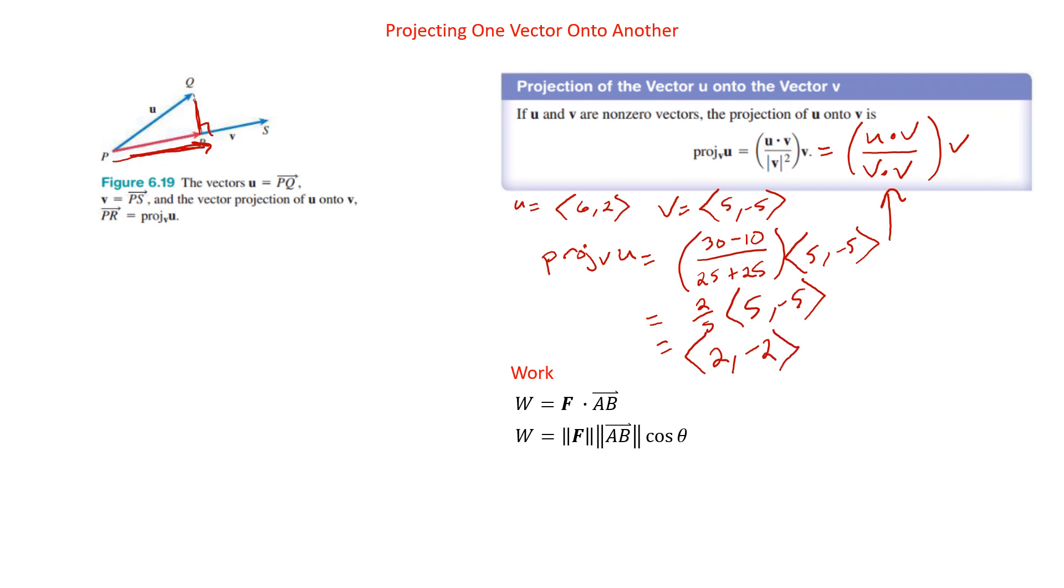So that would be the projection of U onto V. And that again is used when we have, a lot of times it's when we have gravity because gravity is going down, but we're on a slant. And so you have to figure out what is the force of gravity going on the slant.